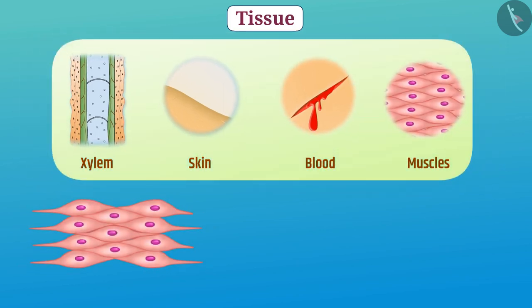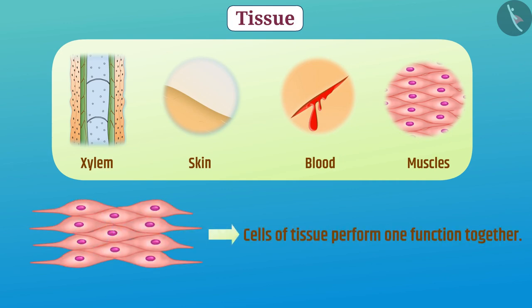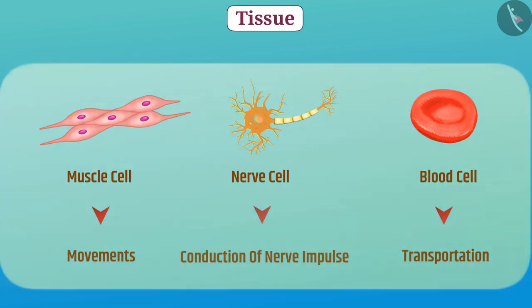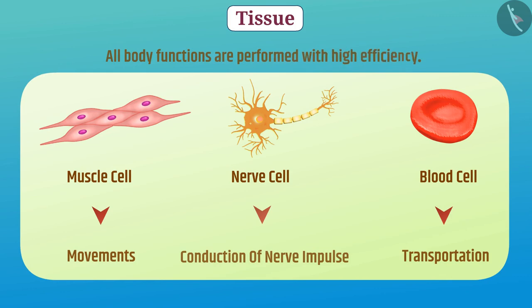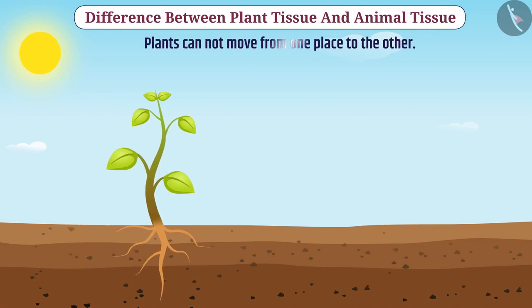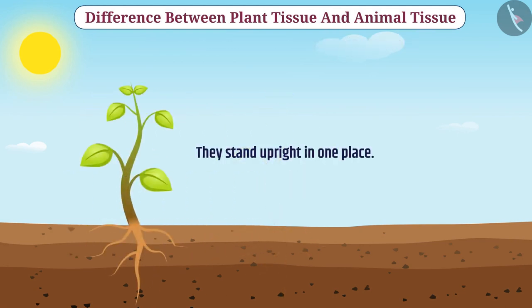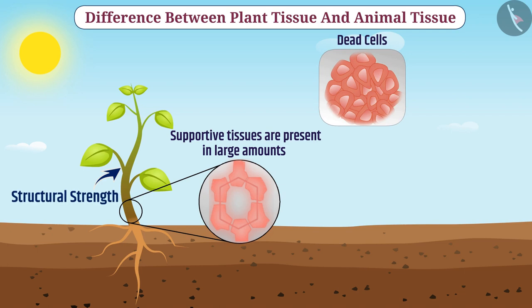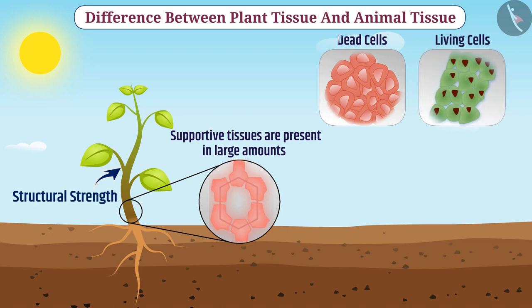All the cells of a tissue have the same shape and together perform one function. Due to special organization of cells and the division of labor, all body functions are performed with high efficiency. We know that plants cannot move from one place to another and they stand upright in one place. Therefore, in plants, supportive tissues are present in large amounts, which provides them with structural strength. Since dead cells can provide structural strength just like living cells, and dead cells require less maintenance, the supportive tissues are made up of dead cells.